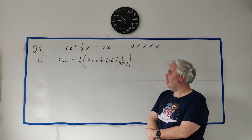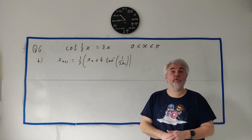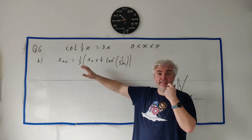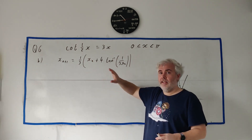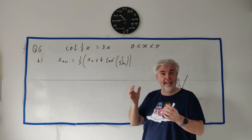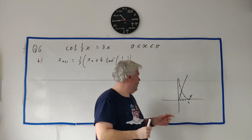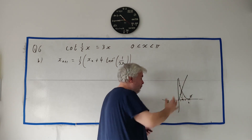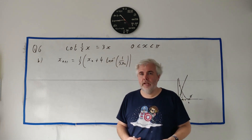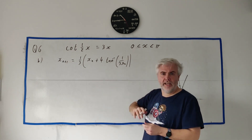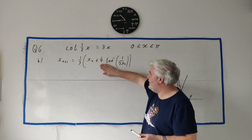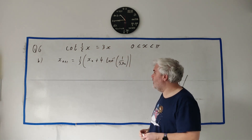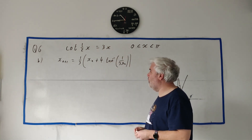In part B, they give us this scary-looking iterative formula and they want us to show that if it converges, it converges to alpha — the same alpha that was the answer to the previous part, the value for x. So basically they're asking us to show that this iterative formula is equivalent to the original equation. This is quite a common question type.